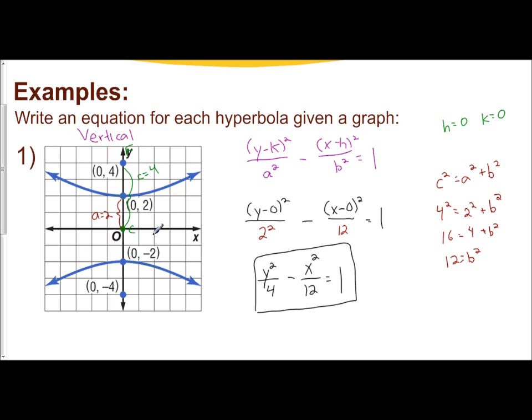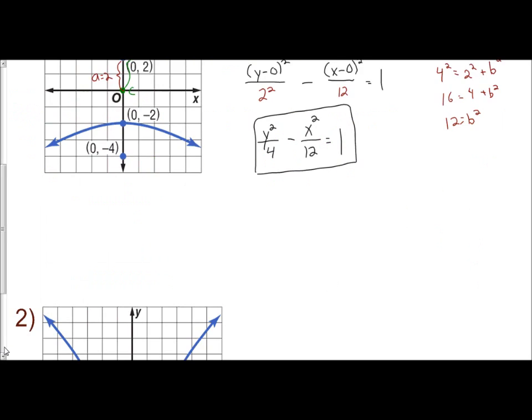It's all based on understanding concepts. A is the distance from center to each vertex. From the center to each focus, each foci is c units. Let's look at one more example of this.